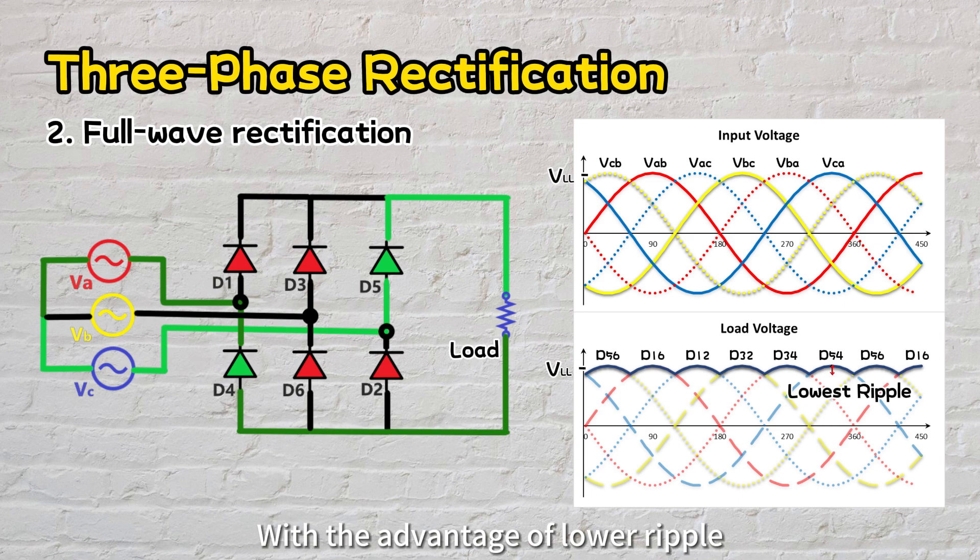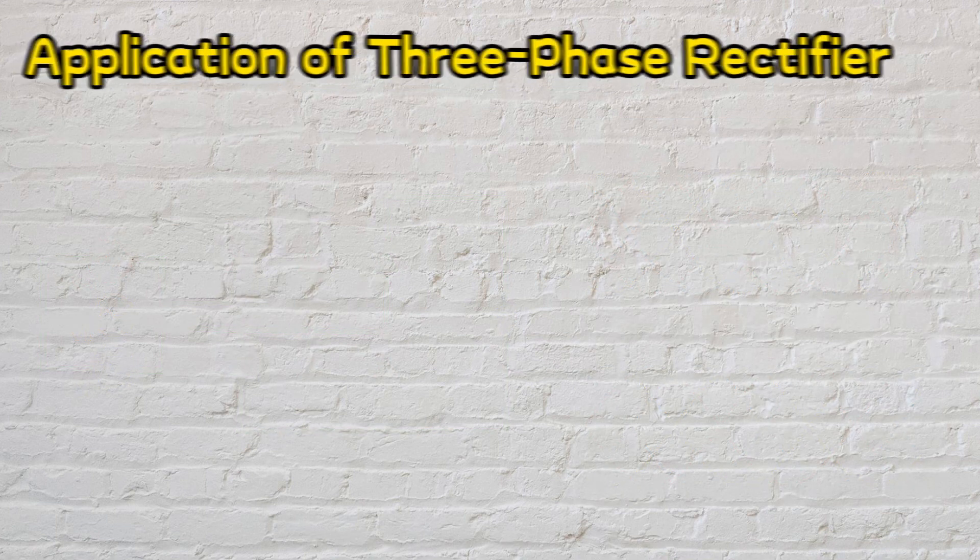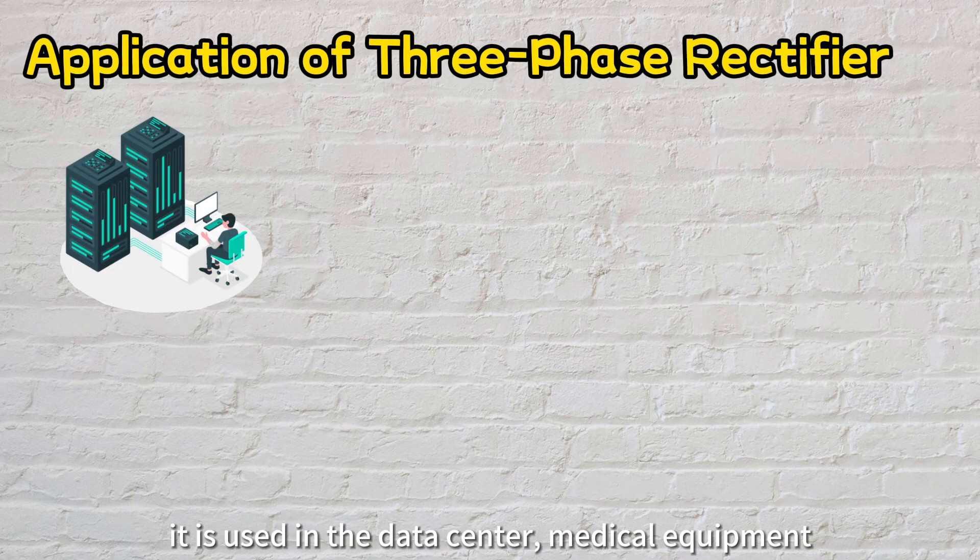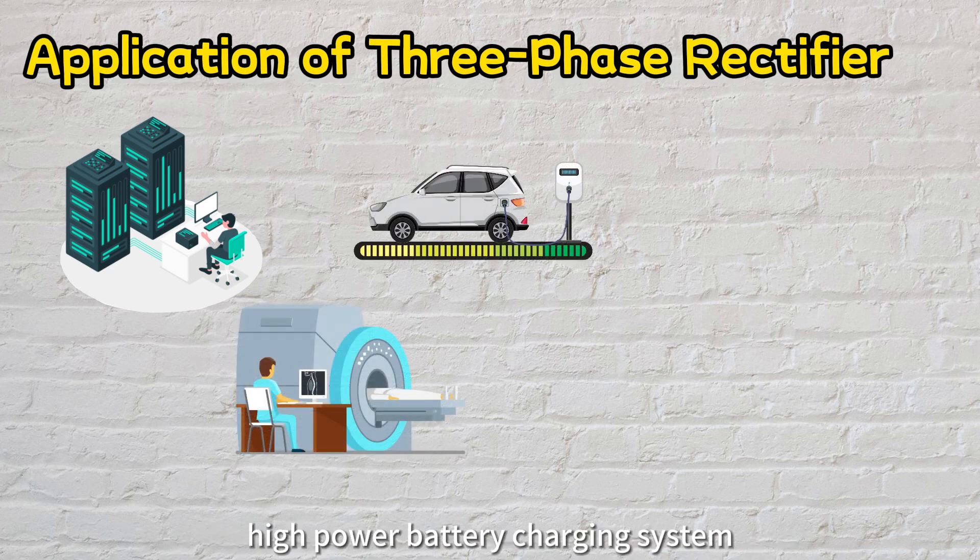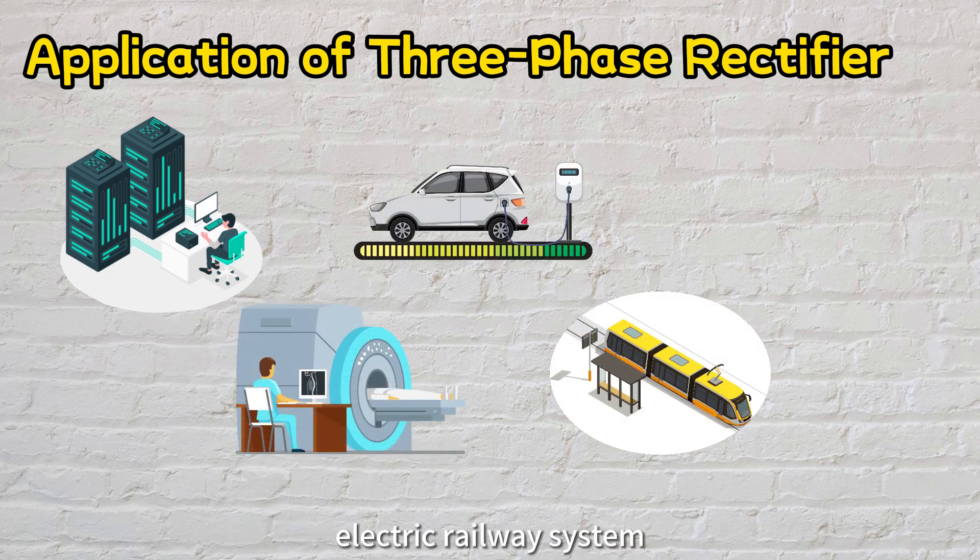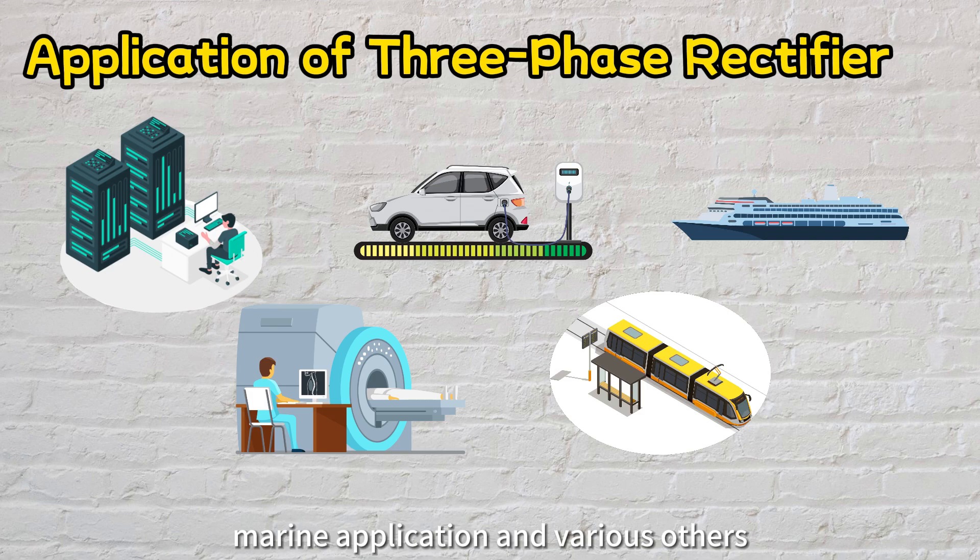With the advantage of lower ripple, three-phase rectifiers are the preferred choice in many industrial applications that demand a high degree of power quality and consistency. For example, it is used in data centers, medical equipment, high-power battery charging systems, electric railway systems, marine applications, and various others.